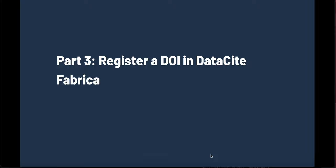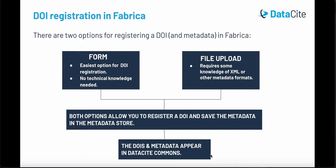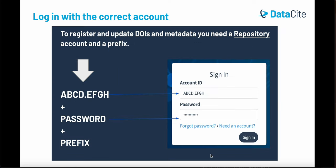Part three: register a DOI in Datasite Fabrica. There are two options for registering a DOI and metadata in Datasite Fabrica. The form is the easiest option and doesn't require any technical knowledge — you can register a DOI in under one minute. The file upload requires some knowledge of XML or other metadata formats. Both options allow you to register a DOI and save the metadata in Datasite's metadata store. The DOIs and metadata then appear in Datasite Commons. Remember, to register and update DOIs and metadata, you need a repository account and a prefix. Make sure you log into Fabrica with the repository account and password.